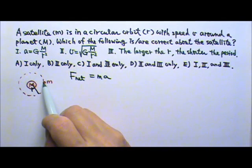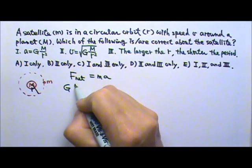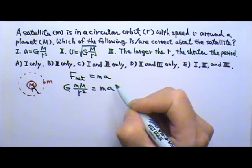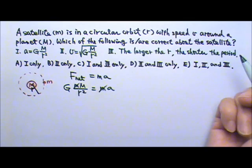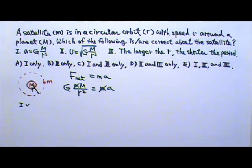The net force that's acting on the little m, the only force that's acting on the little m, is the gravitational force GMm over r squared. And that equals ma. So if we cancel the m, we get the acceleration is that. So 1 is correct.